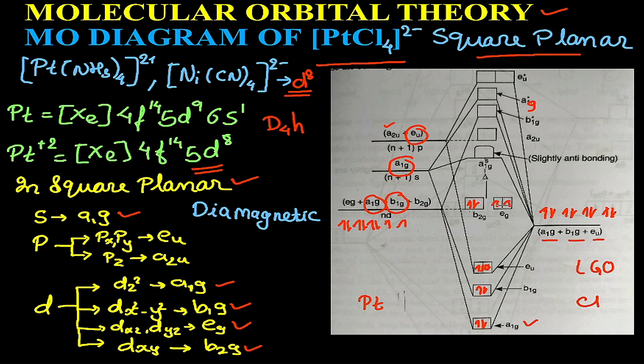That is b2g, so two electrons will be filled here. Four electrons will be filled in eg, and remaining two electrons will be filled in a2g that is slightly antibonding. So there are total eight electrons and all the electrons in this particular system are paired, and as a result the complex is a diamagnetic complex.